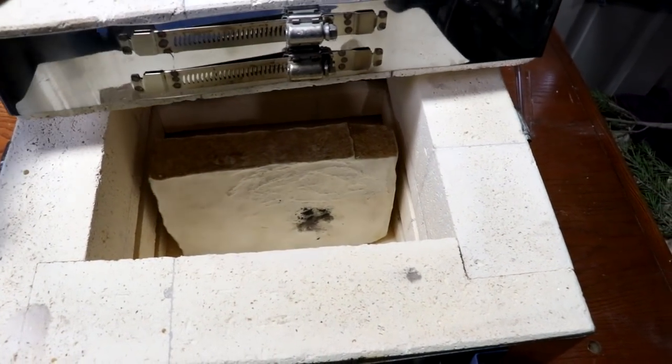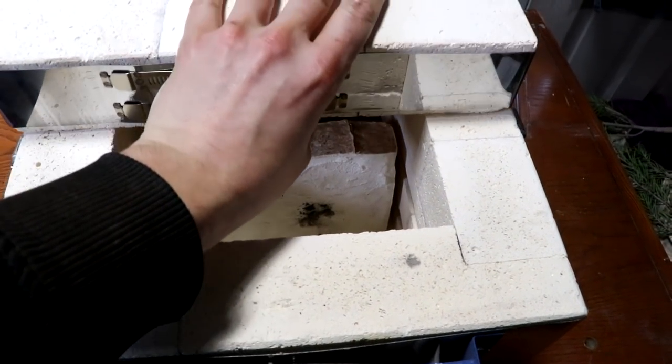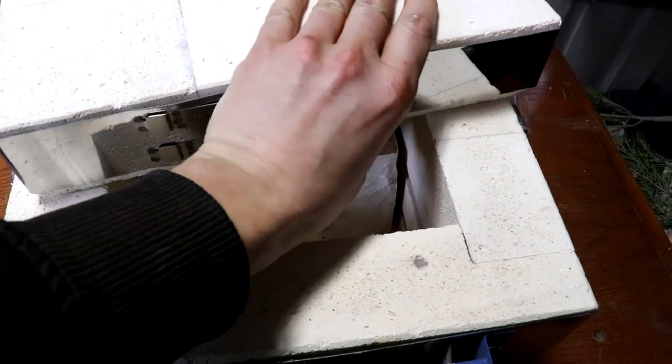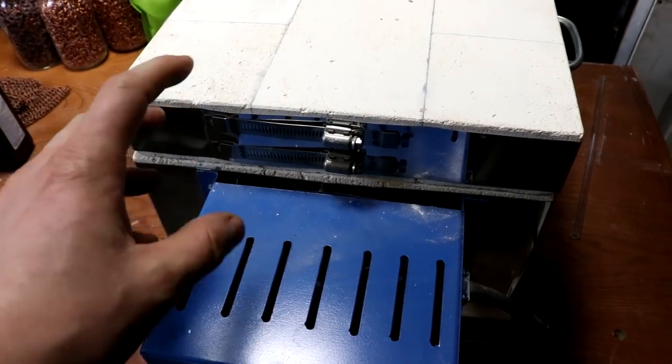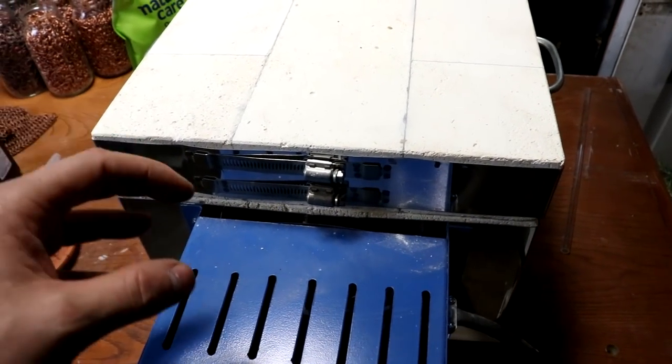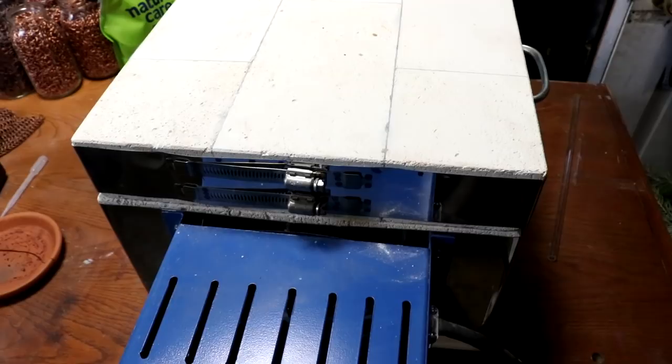The plaster will still have quite a bit of water in it, so I'm going to have to heat it very slowly to drive that off and not crack the plaster. I'm just going to turn this on low. The idea is to get it just above the boiling point of water to drive that all off, and then I can ramp up the heat.